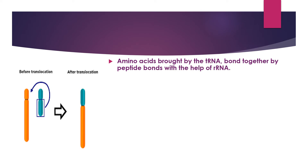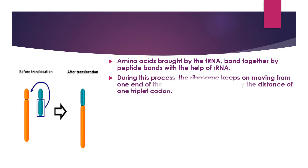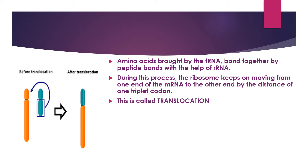Amino acids brought by the tRNA bond together by peptide bonds with the help of rRNA. During this process, the ribosome keeps moving from one end of the mRNA to the other by a distance of one triplet codon — meaning three nucleotides. This process is called translocation.